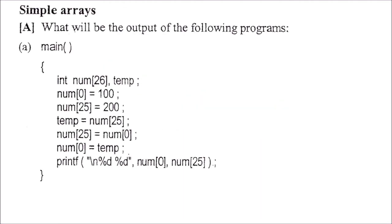This is chapter number 8, Arrays. What will be the output of the following program? We have an array with dimension 26. This is the first number and this is the last number, meaning the last location of the array where 100 is stored and 200 is stored at the first location.